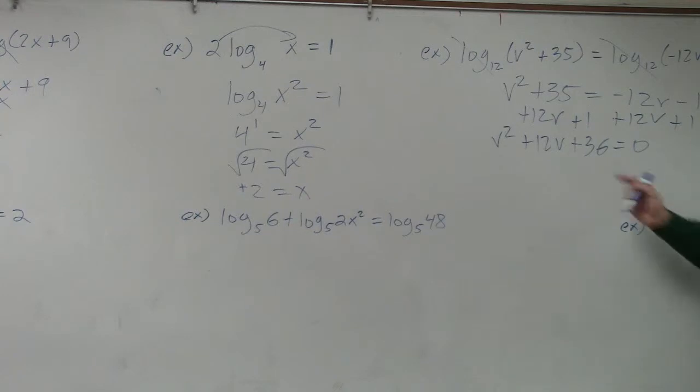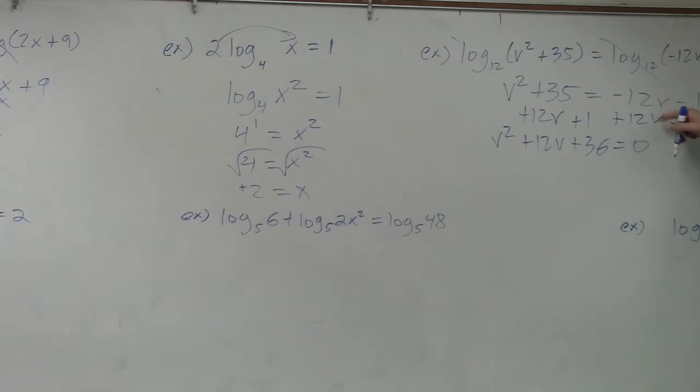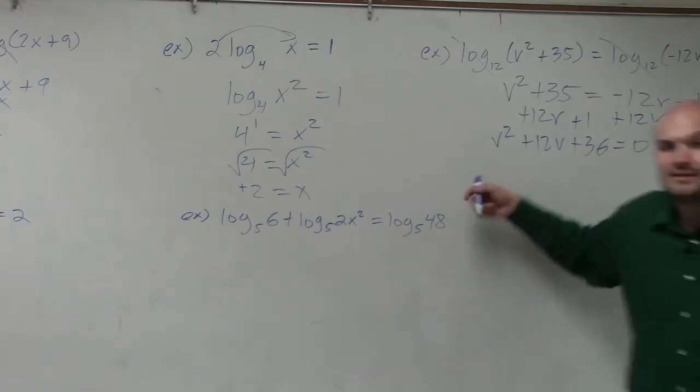So now, what I did was I added 12v to get rid of the 12v here, and I added that on both sides, and I added 1 on both sides. So now there's nothing left over here except for 0, and I added everything over here. Now, why would I want to do that?